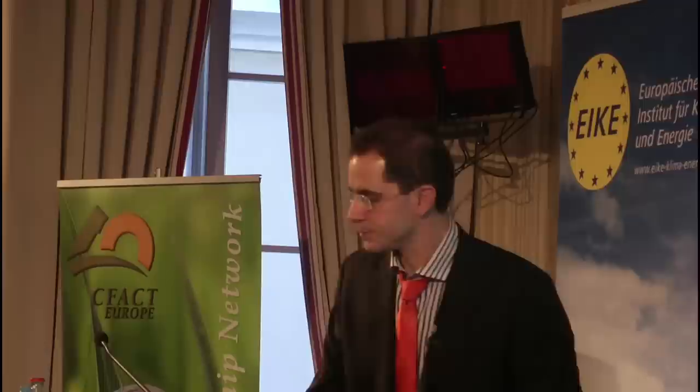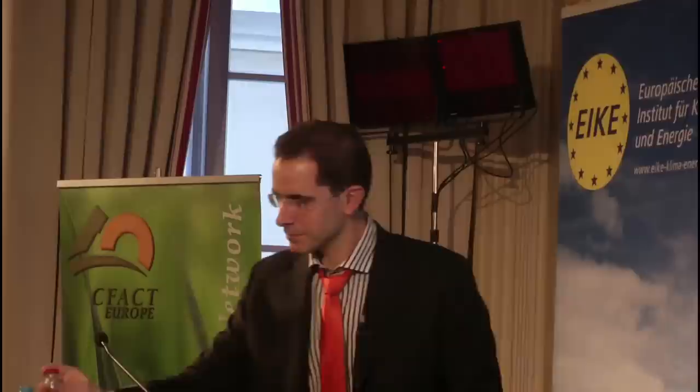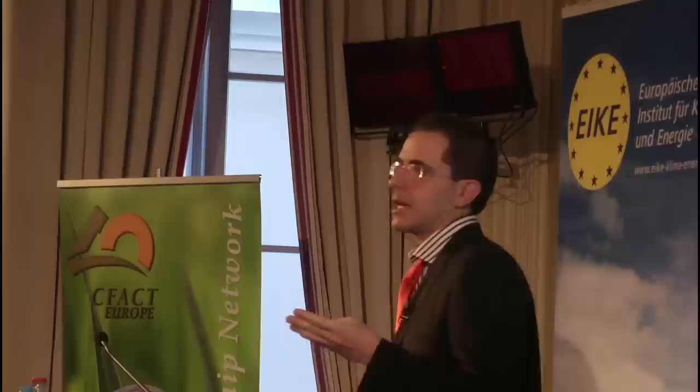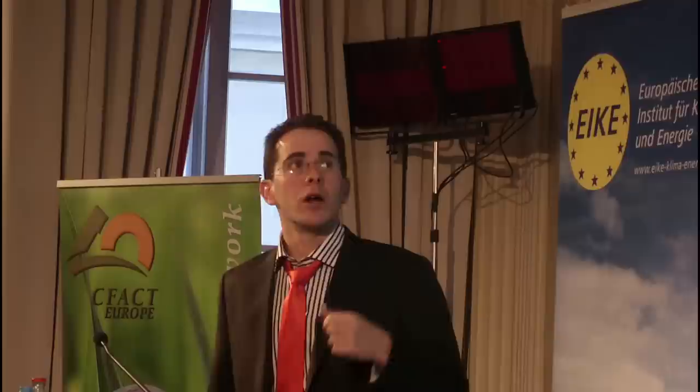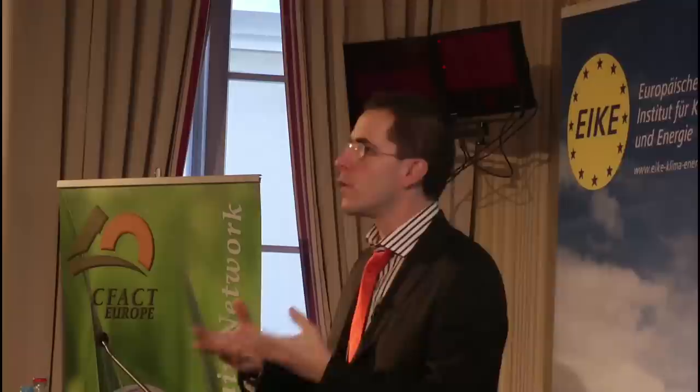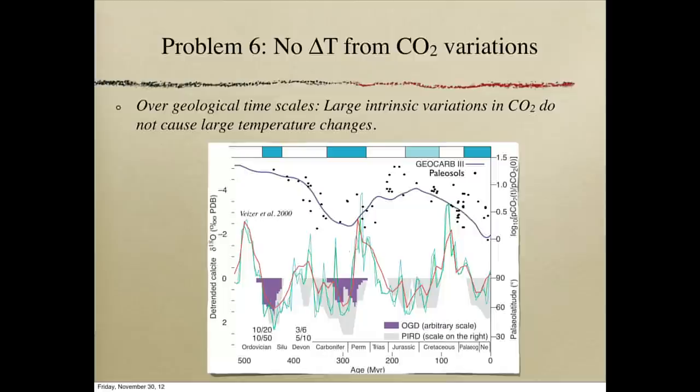On longer timescales, there are much larger CO2 variations due to geological activity — more or less volcanic activity. Over a timespan of hundreds of millions of years, we had atmospheric CO2 variations of as much as a factor of 10. And we see no correlation between CO2 in the atmosphere and the temperature on Earth, which is reconstructed here using oxygen isotope ratios in fossils.